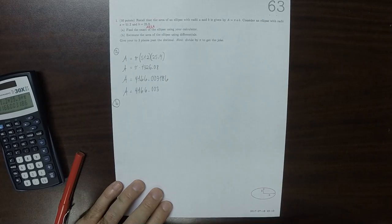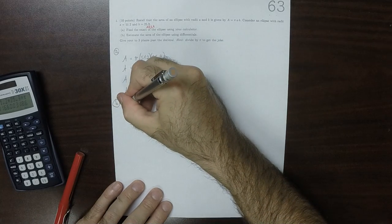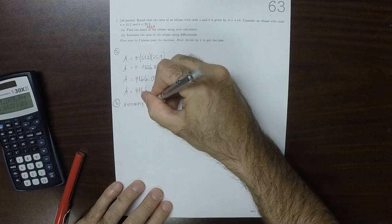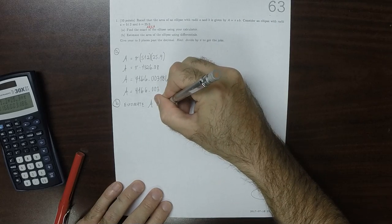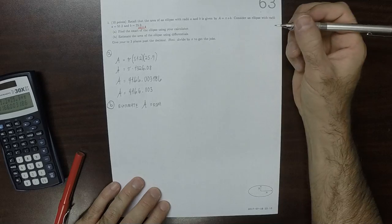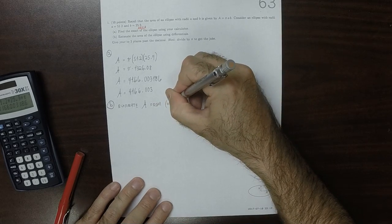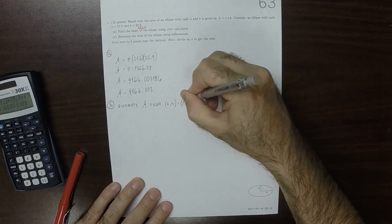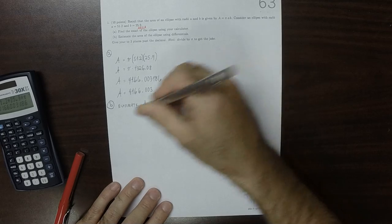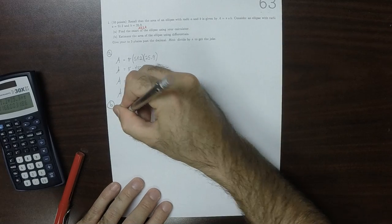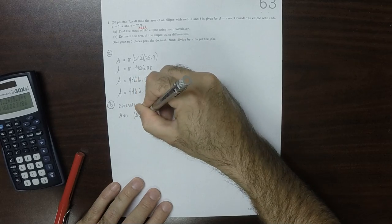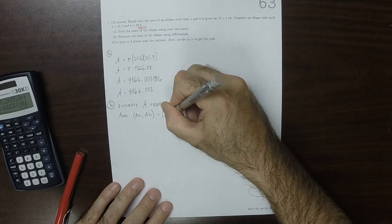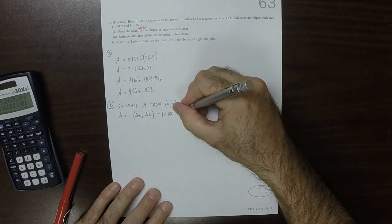Part B. We want to estimate the value from nearby point (a, b) equal to (51, 26), and Δa, Δb equals 0.02, negative 0.01.